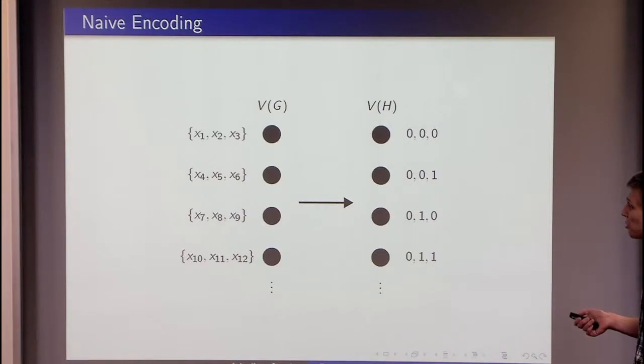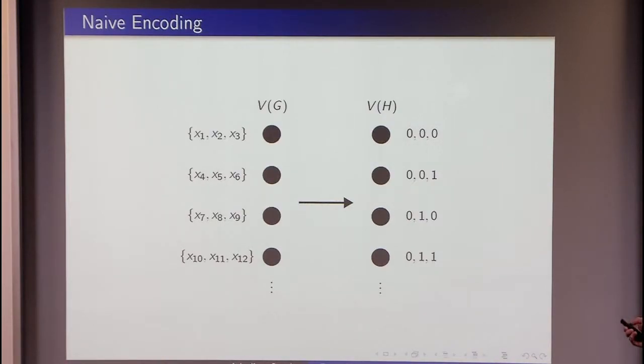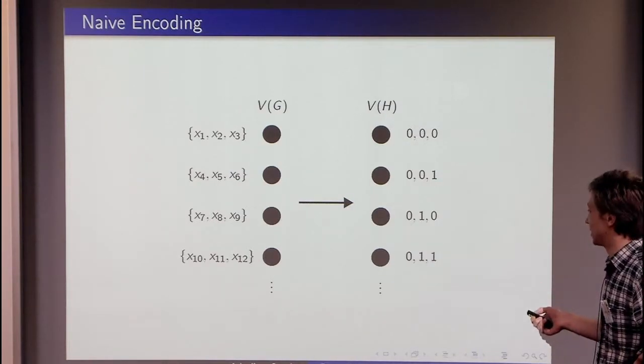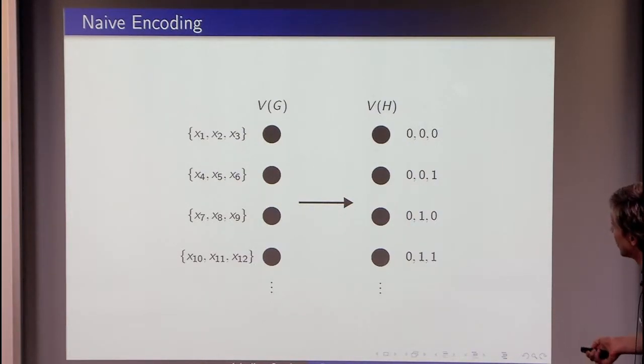The problem is that we may want to reuse the same vertex of H many times. We may want to reuse some valuation multiple times. But what we can use here, we can use permutations of those vertices because permutations are legal functions from here to here.